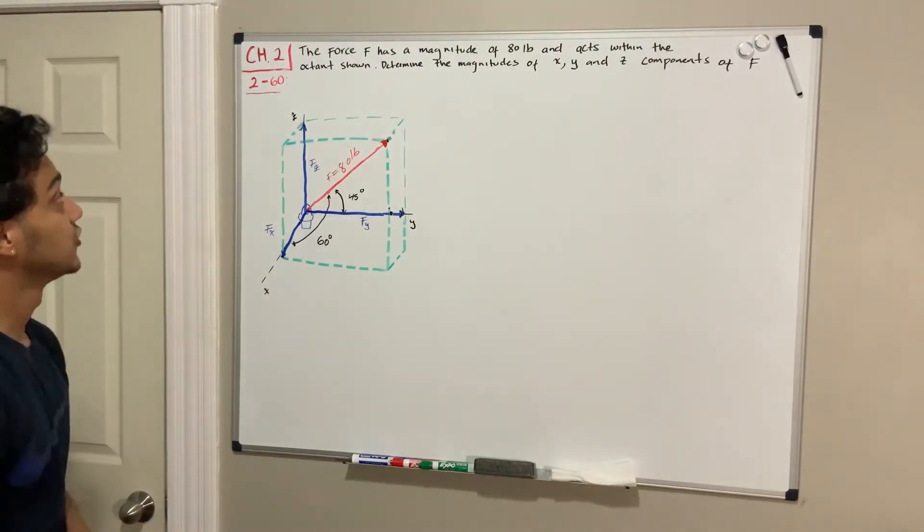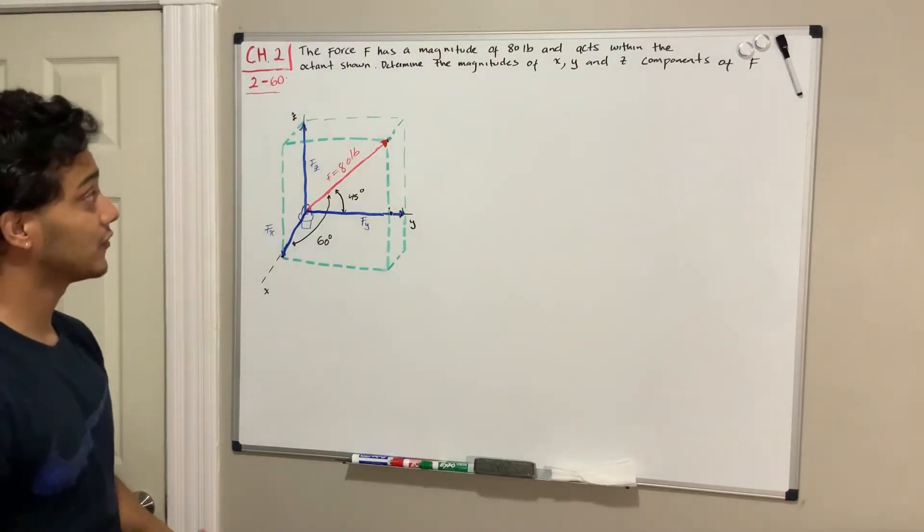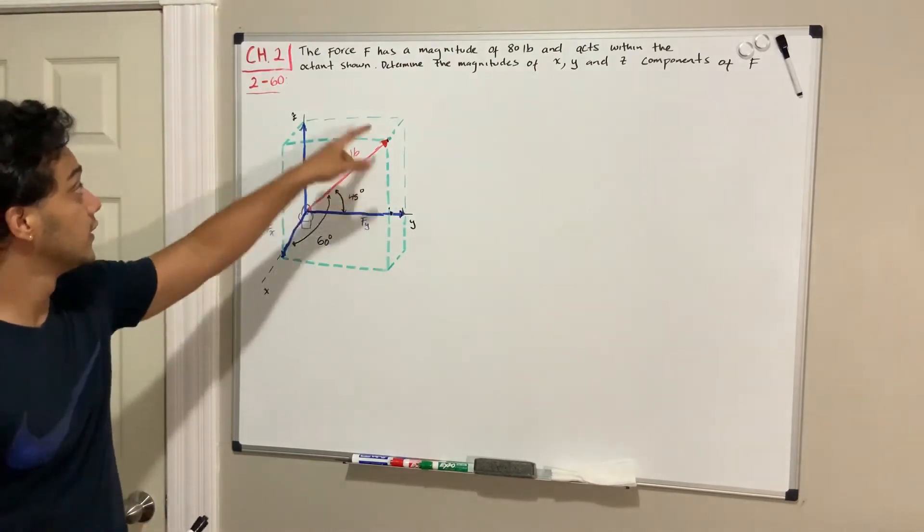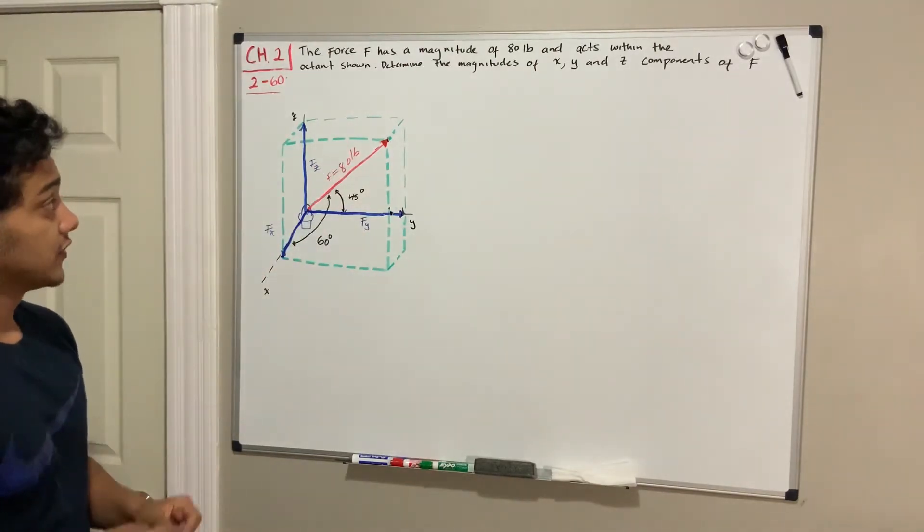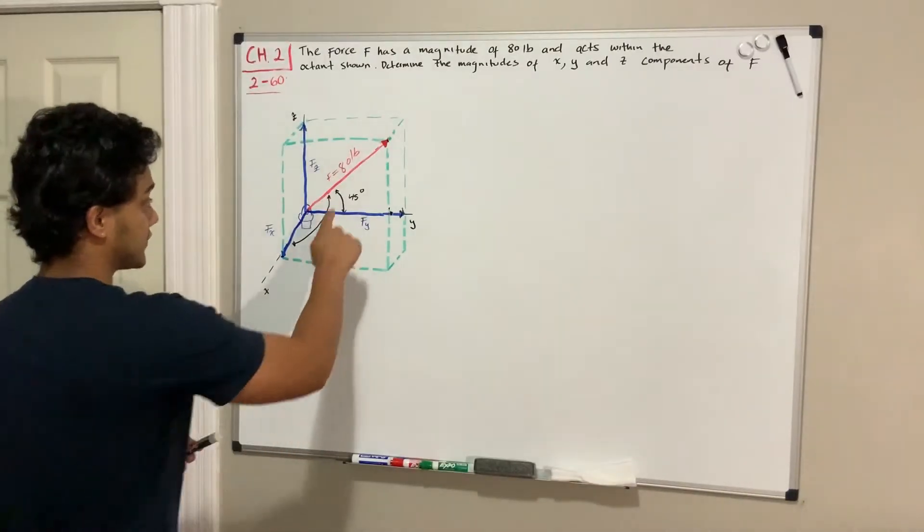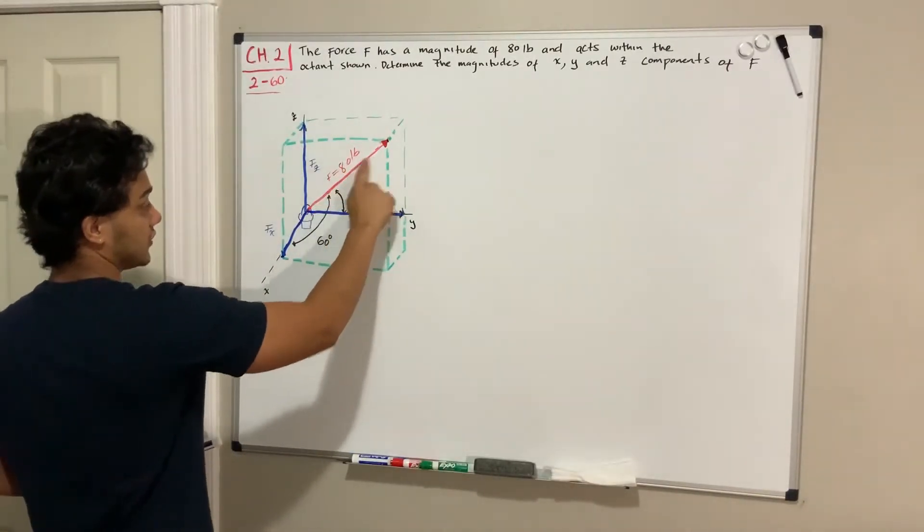We're going to do problem 2.60. It says the force F has a magnitude of 80 pounds and acts within the octant shown, so this green octant. F is this 80 pound force, this red one.